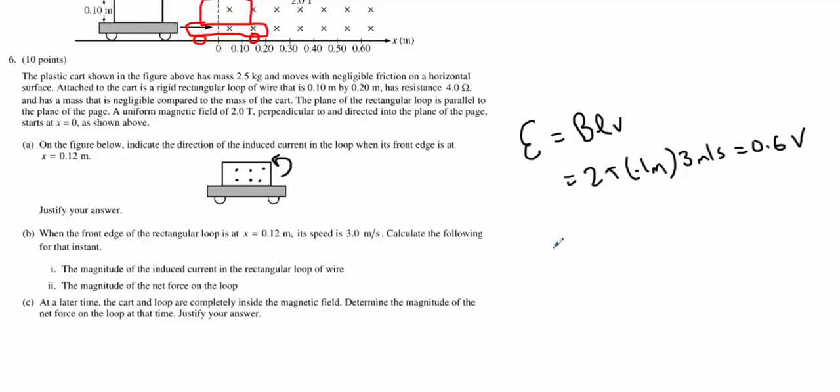Now the current, if we look at Ohm's law, I will be the voltage over the resistance. Well, we just figured out the voltage is 0.6 volts. The resistance was given 4 Ohms. And we're going to get 0.15 amps of current. That is the answer to B1.